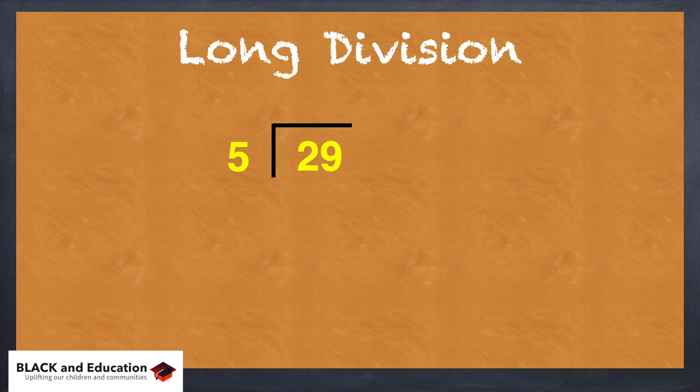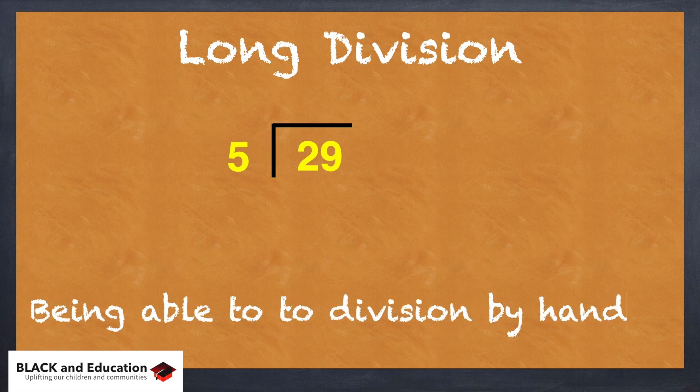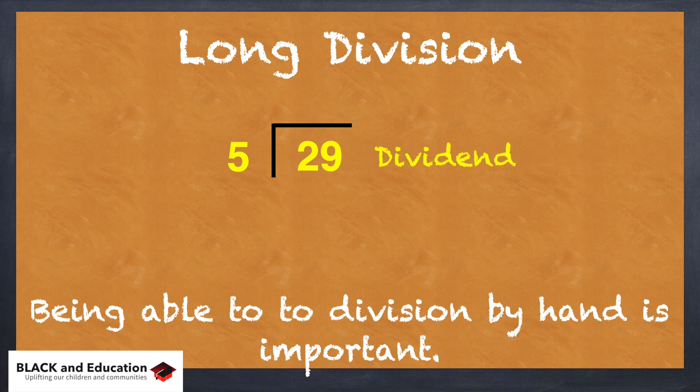So let's look at another division problem that we can do by hand, which is so important for us to learn how to do. So we have here 29 divided by 5. 29 is the dividend and 5 is the divisor.